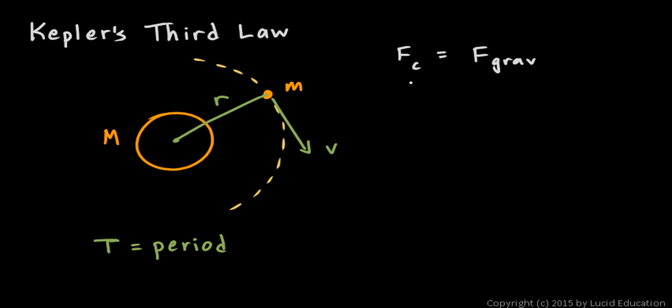We have an equation for the centripetal force and also an expression for the force of gravity. The centripetal force is mv² over r, where m is the mass moving in a circle, v is the velocity, and r is the radius of the circle. That equals the force of gravity, which is capital G, the universal gravitational constant, times the product of the masses, big M times little m, divided by the square of the distance between them, r².